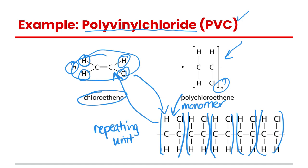So the key points here are: you need to be able to recognize the monomer, the repeating unit; to join three or four monomers together in a polymer chain; and to represent that for pretty much any alkene you are given. That's it for the polymerization reaction of alkenes — we'll see you in the next one.